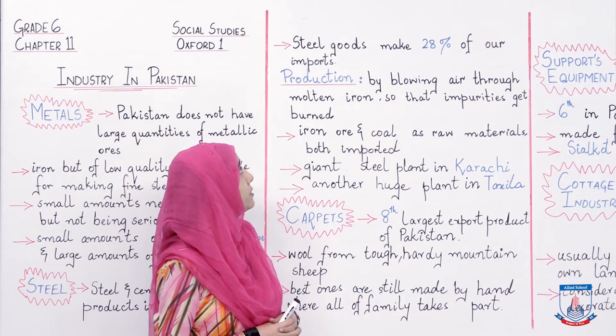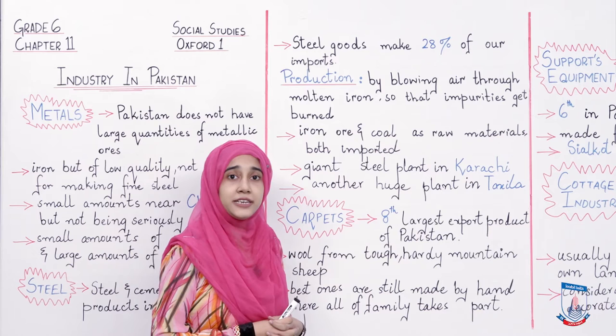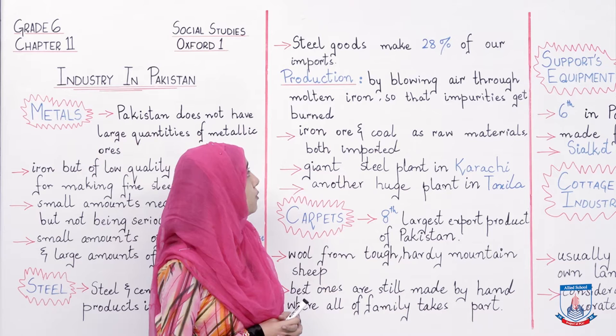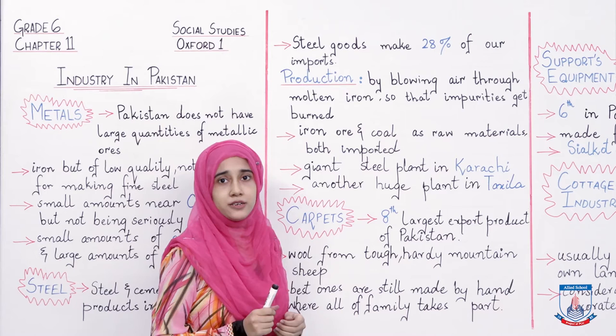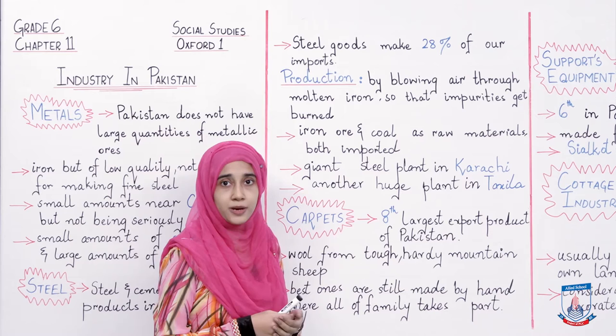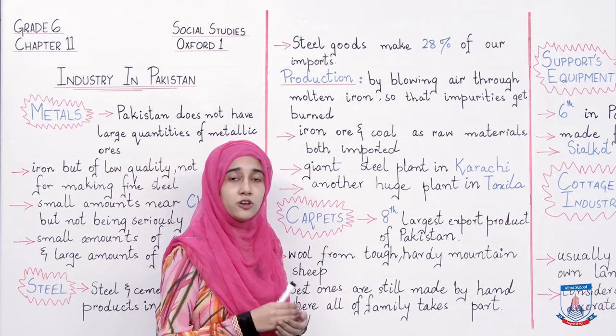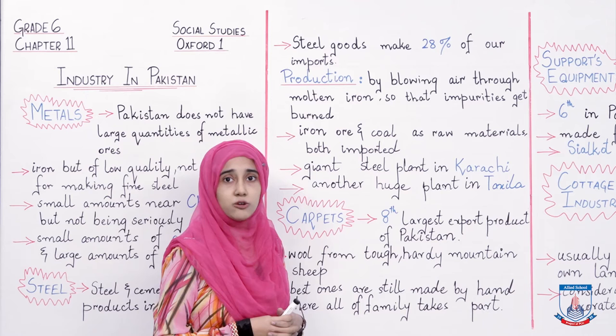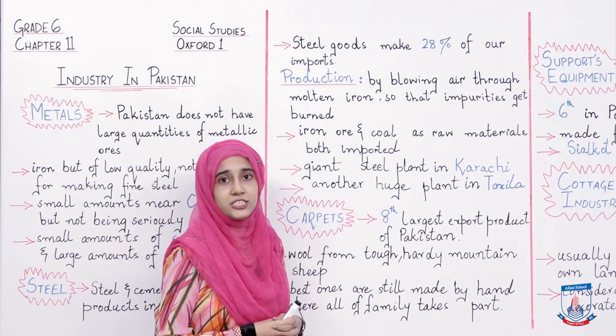Steel goods make 28 percent of our imports. Steel ki production mein molten iron — yani shadeed garam iron — ke through hawa guzari jati hai to change it into steel, so that impurities get burned. Aur aisa isliye hota hai ke jo impurities hain, jo cheezein hamein nahi chahiye, woh jal jayen.